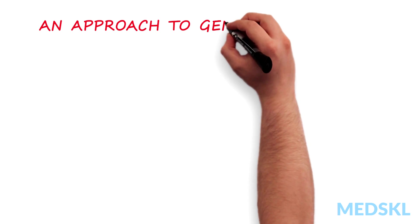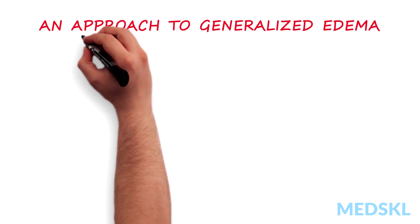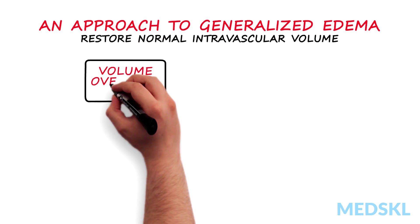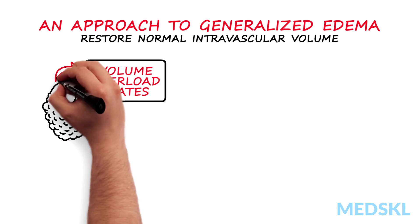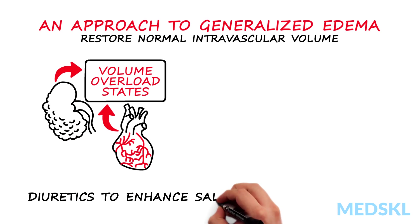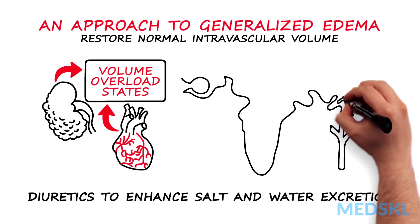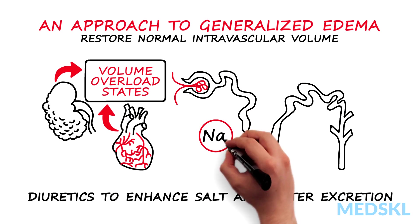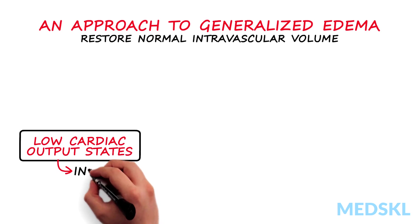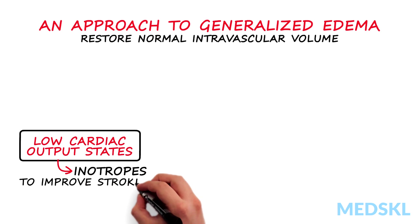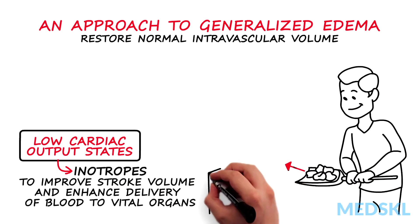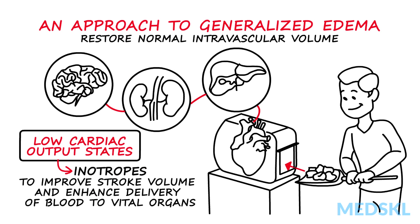The broad approach to treating edematous states is to restore normal intravascular volume. In states of volume overload as seen in kidney and heart diseases, this usually involves the use of diuretics to enhance salt and water excretion. In low cardiac output states, inotropes can be used as well to improve stroke volume and enhance delivery of blood to vital organs.